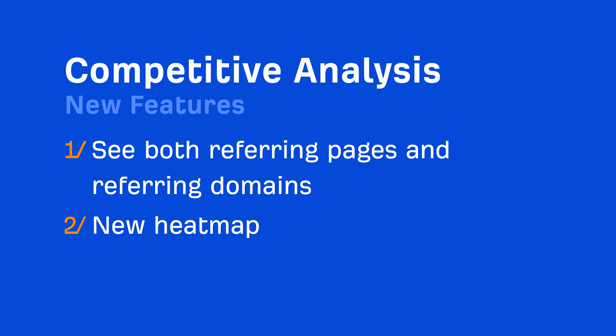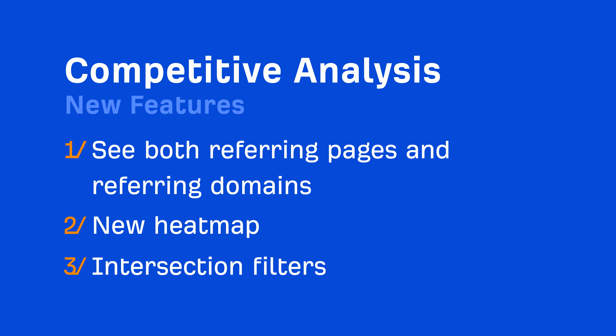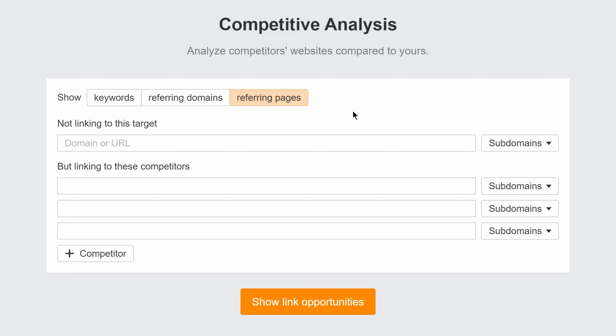Third, in the old Link Intersect there was no way to set intersection filters, but now you can. One great use for this is to find listicles to build links from.